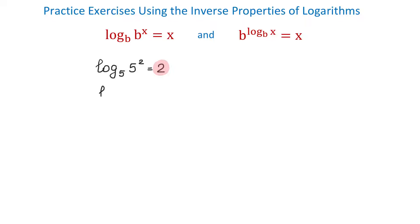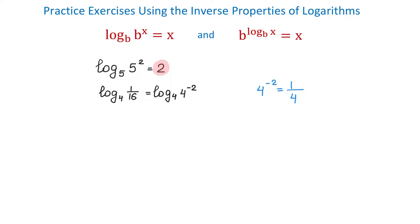In the second example, we will evaluate log base 4 of 1 over 16. To apply this property, we need to have the same bases. So, if this base is 4, we need to write 1 over 16 as an expression that also has the base 4. We will write 1 over 16 as 4 to the power of negative 2, because 4 to the negative 2 equals 1 over 4 to the positive 2, which is 1 over 16. Now, once this base is the same as this base, the value of this logarithm will be negative 2. So, log base 4 of 1 over 16 equals negative 2.